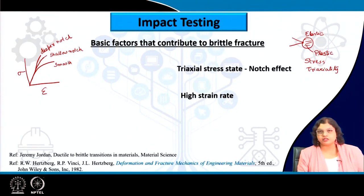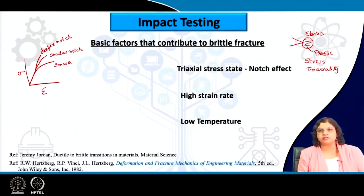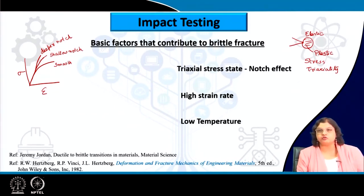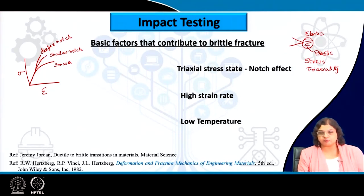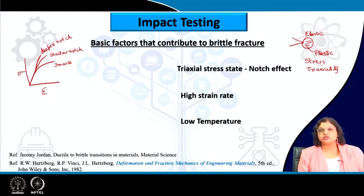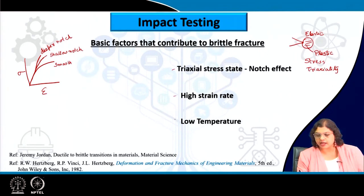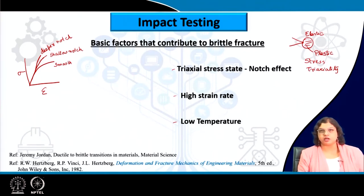Apart from notch effects, high strain rate has a role to play as well as low temperature. When impact testing was designed, all three factors were taken into consideration so that all can be applied simultaneously, allowing us to figure out the worst-case scenario and the fracture toughness in that condition. In actual practice, maybe all three conditions may not be applicable at the same time, and whatever toughness we determine from impact testing gives us a conservative lower-bound value.